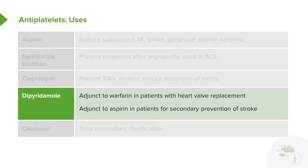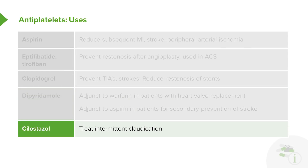Dipyridamole is often used in combination — sometimes as an adjunct to warfarin in patients with artificial mechanical heart valves, and in combination with aspirin for secondary prevention of stroke. If a person has a stroke, we give them aspirin. If a person on aspirin has a stroke, we give them aspirin plus dipyridamole, or we switch them to one of the other drugs. There is also a new drug used to treat intermittent claudication.